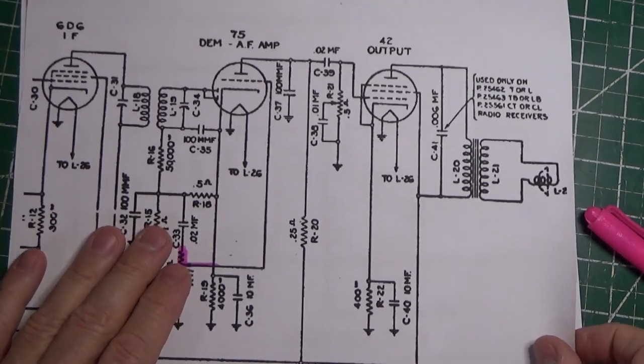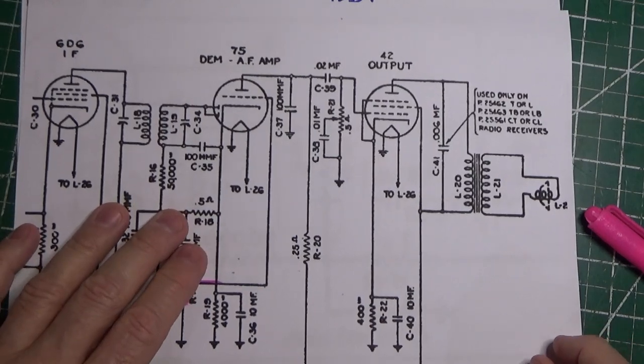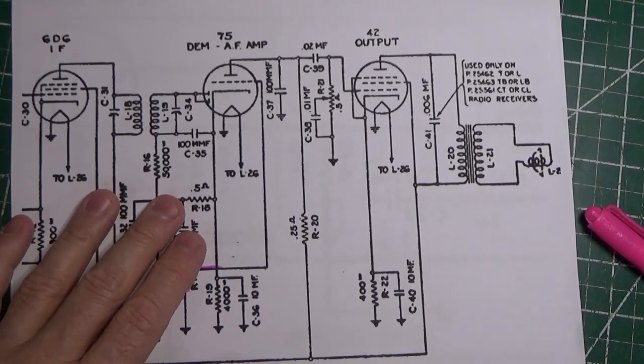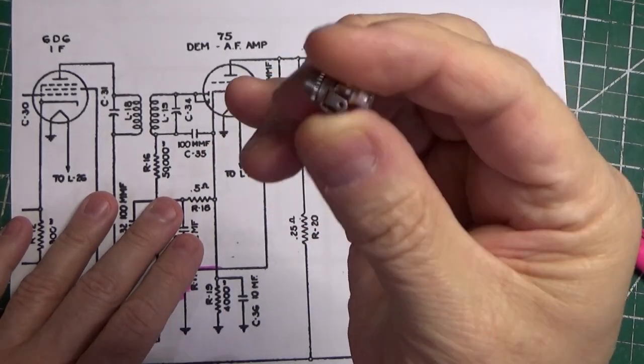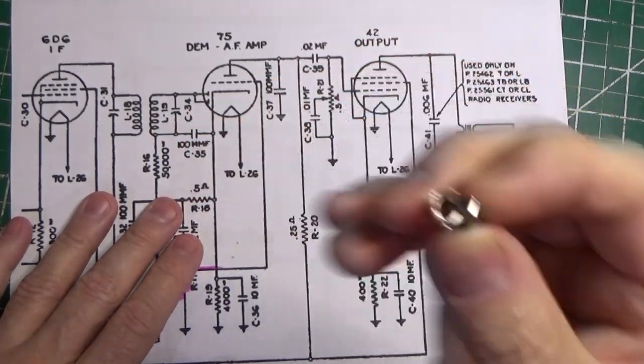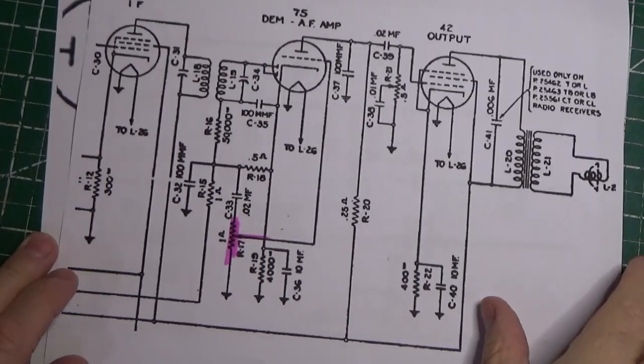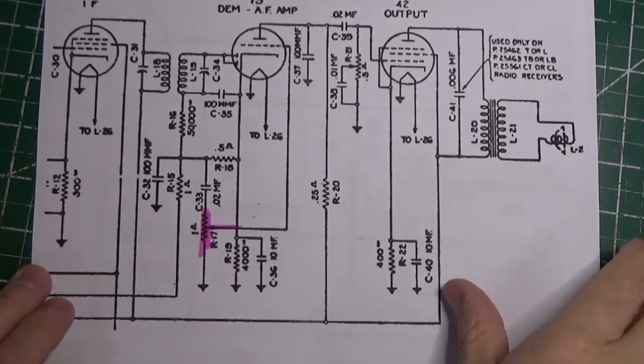In the back of the radio you're going to want to put two things. You're going to want to put a switch, a single pole double throw switch, and you're going to want to put one of these little jacks right here. This is a 3 millimeter jack just like so.